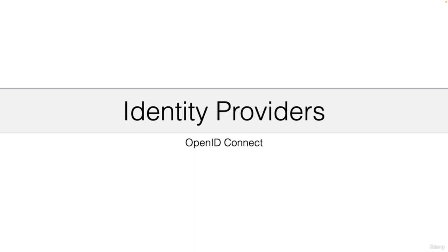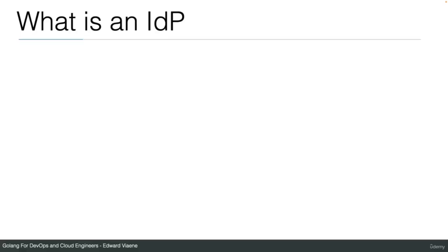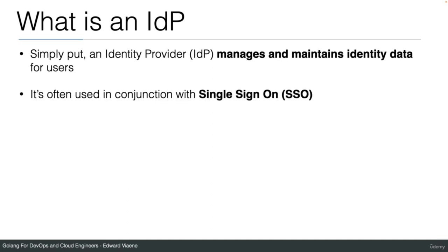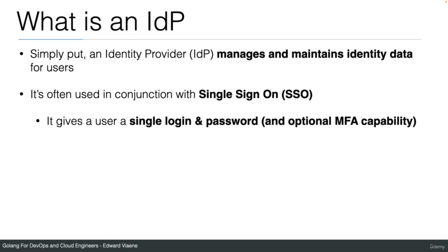In this section I'll be talking about identity providers, mainly OpenID Connect or OIDC. An identity provider, abbreviated IDP, manages and maintains identity data for users. It's often used in conjunction with single sign-on (SSO). It gives a user a single login and password and optional multi-factor authentication capability.